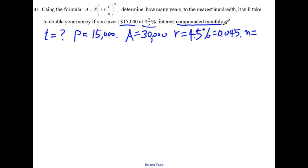The money was invested at 4.5% interest compounded monthly, so the interest is compounded 12 times a year. So N is 12.